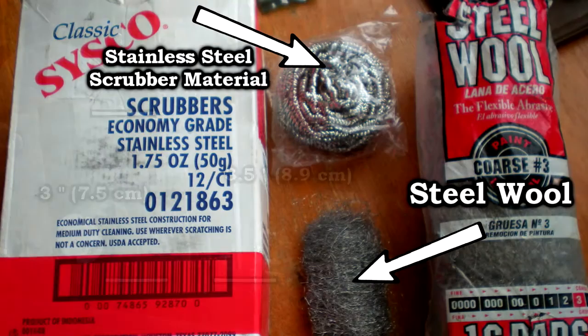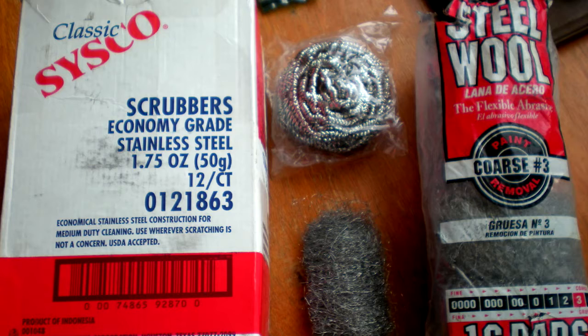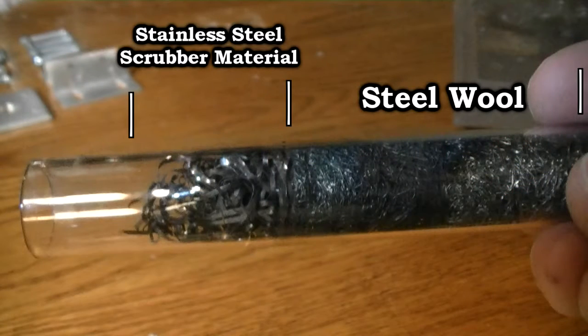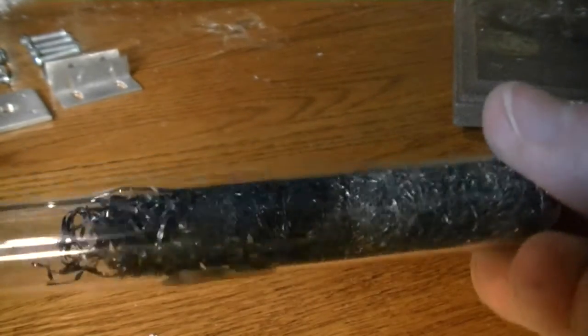I started using this steel wool I bought at the hardware store but it has some sort of oil on it that creates smoke when you heat it up. So I'm switching over to this stainless steel scrubber material I found online. The stainless steel scrubber material is great because it doesn't create smoke when you heat it up, but the steel wool is easier to compress.